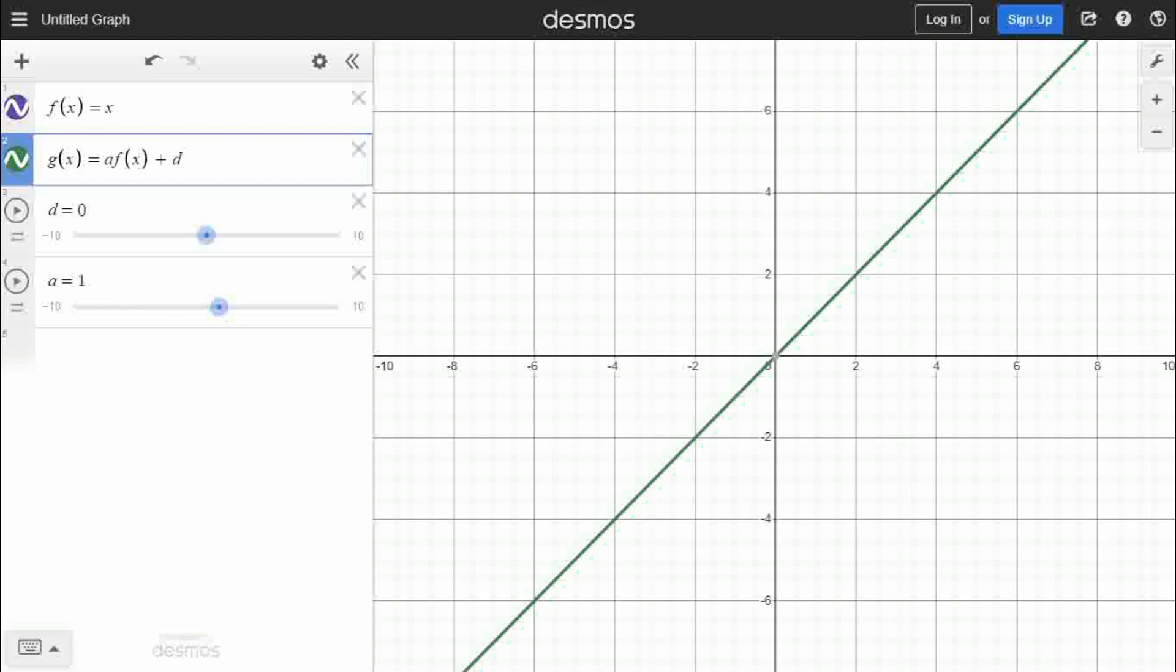But let's start with our d first. You notice, remember our d, our plus d is going to shift it up or down. So watch what happens when I slide this up and down. This is simply changing the y-intercept. And if you loop it right here, you'll see it just shifts up and down. And so when we add that plus d, we're not changing the slope of our graph at all. We're simply shifting it up or down or translating it up or down.